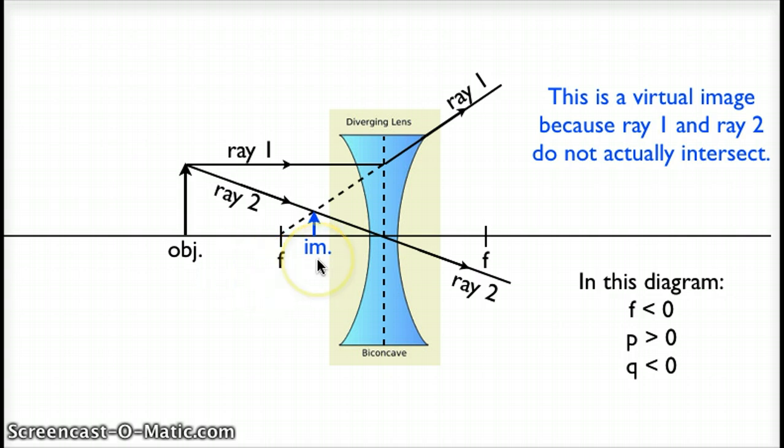Our image is also on the virtual side. It is not where we would expect the image to be. We would expect images to form on the other side, the outgoing, the real side of our lens. So the fact that our image is on the virtual side means that our image distance would be a negative number if we wanted to use the lens equation.